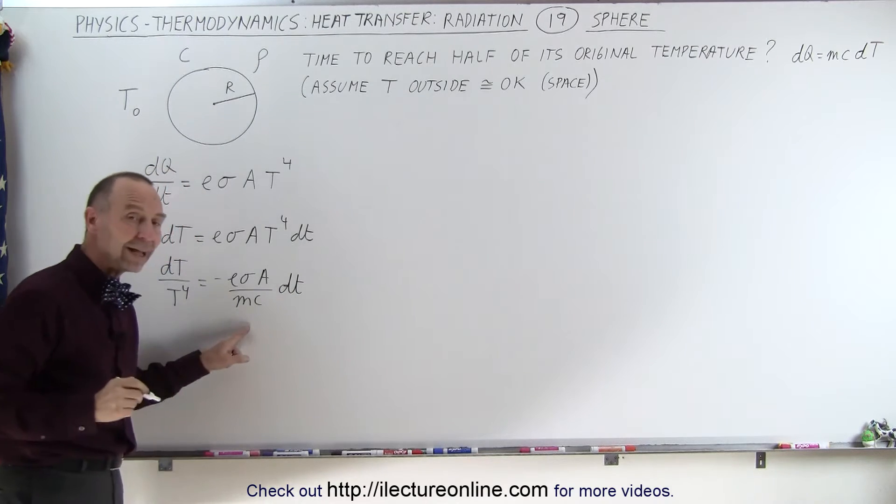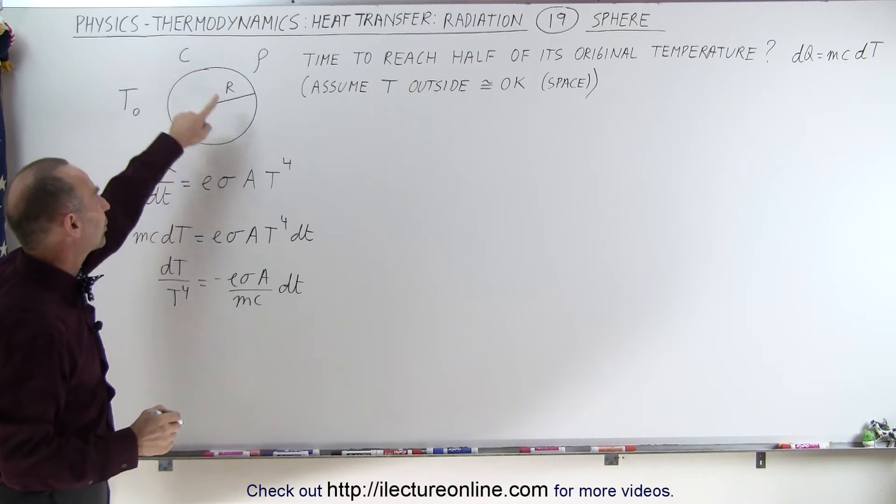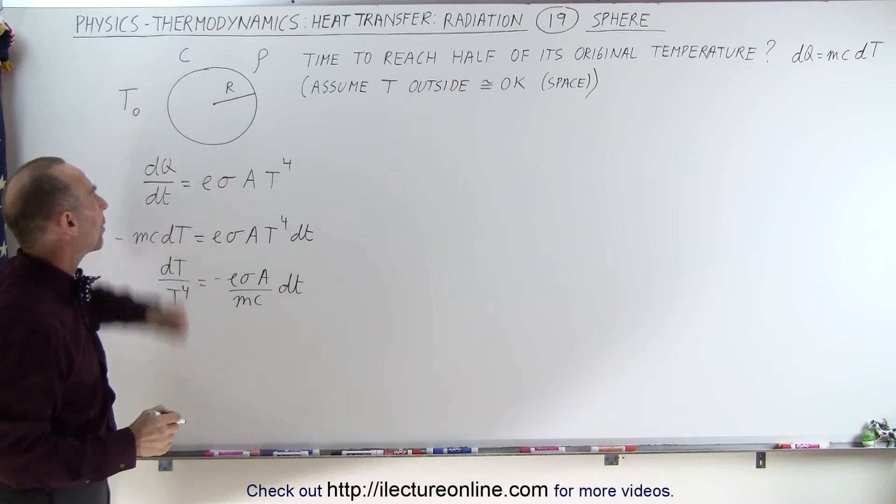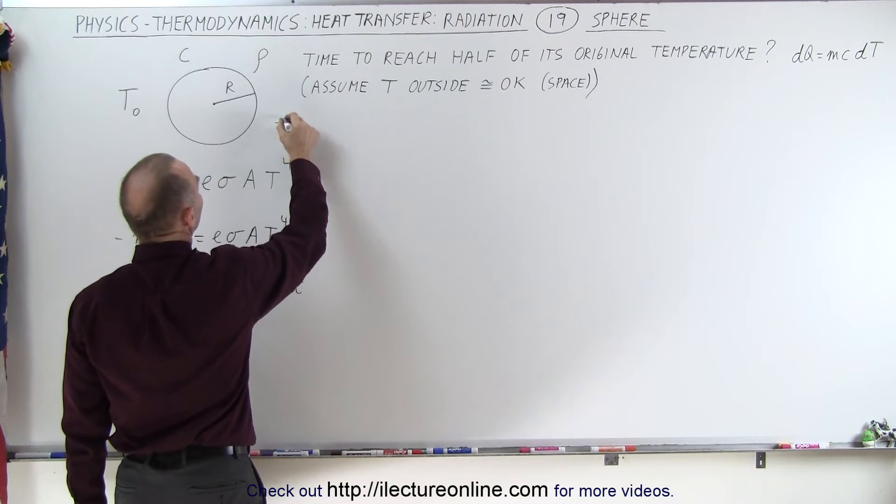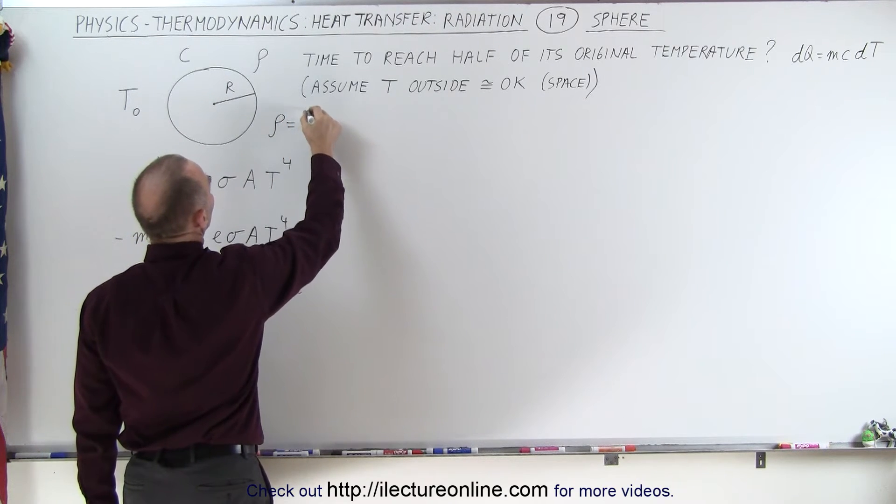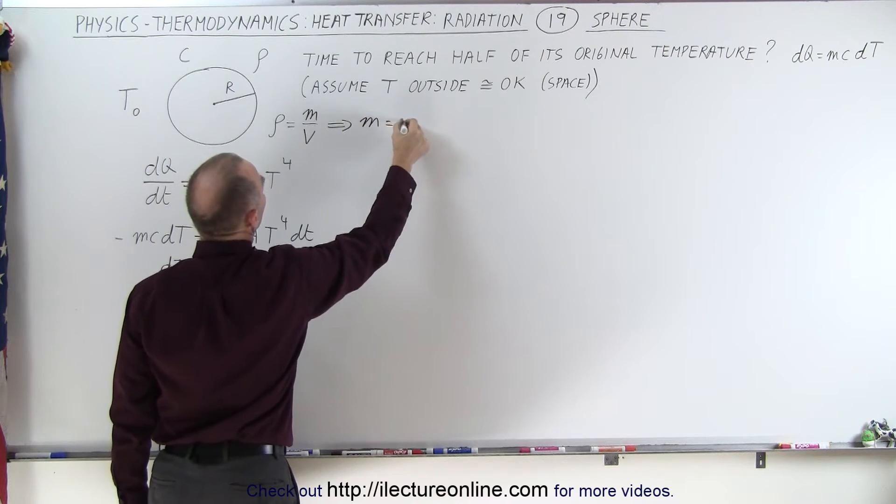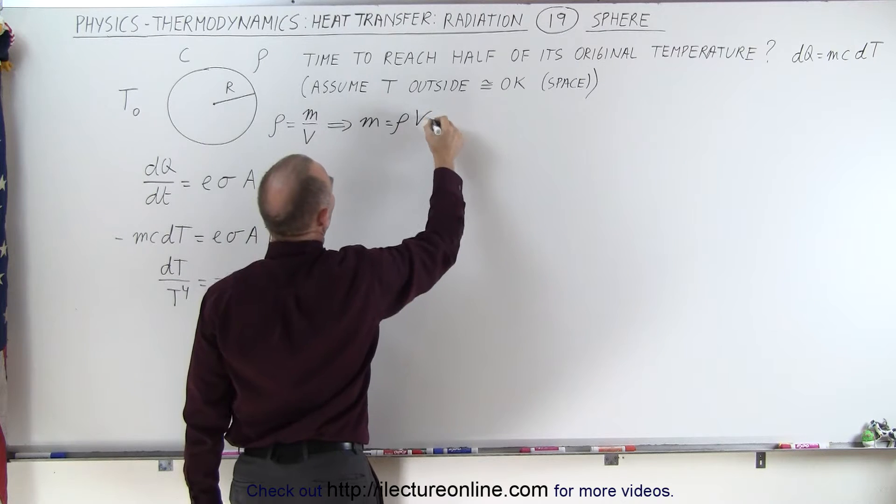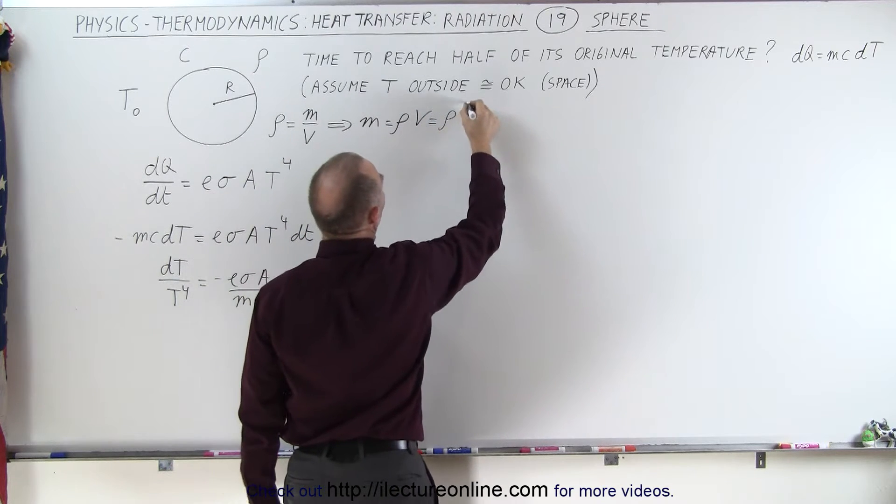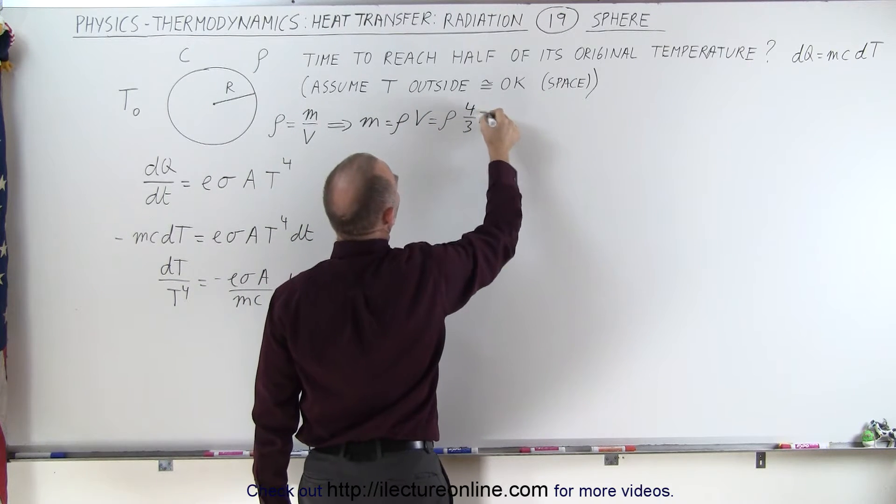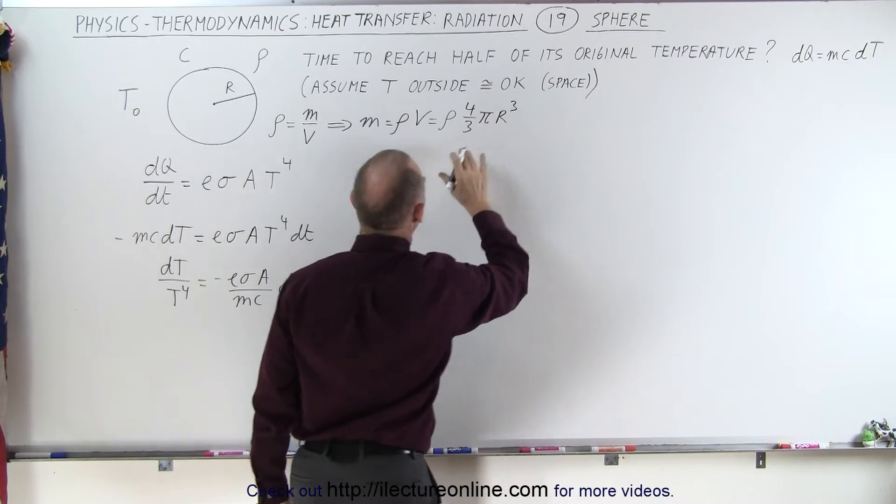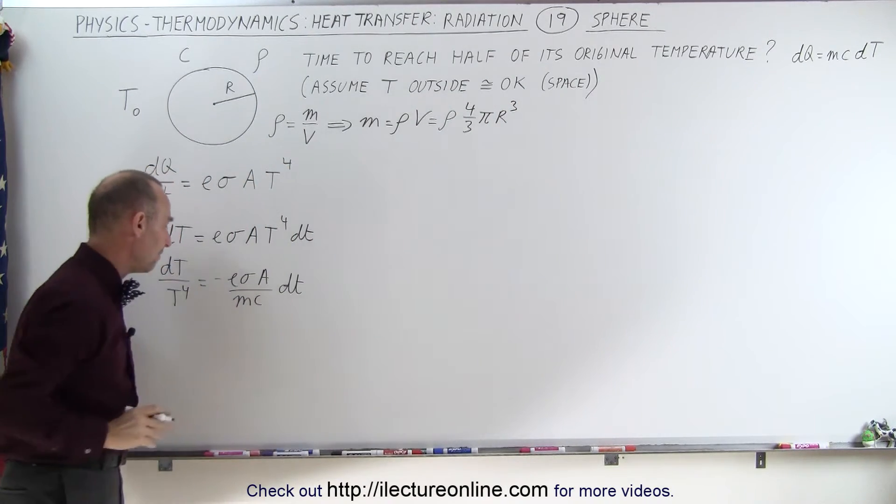Notice, we were not given the mass of the object. We're going to have to calculate that based upon what they've given us, because we realize that the density by definition is equal to the mass divided by the volume, which means that the mass will be equal to the density times the volume, which is equal to the density times four-thirds pi r cubed.